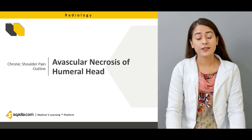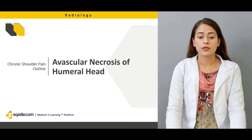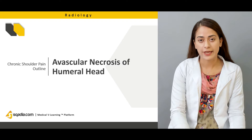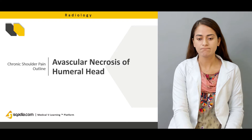We will also talk about avascular necrosis, which is death of the bone due to cessation of blood flow and nutrients to the bone. We will discuss avascular necrosis specifically in the context of the humeral head, and how degenerative changes take place as a consequence of that cessation.